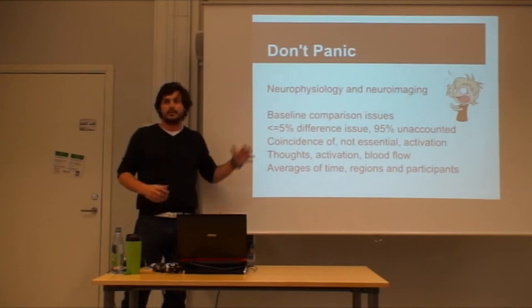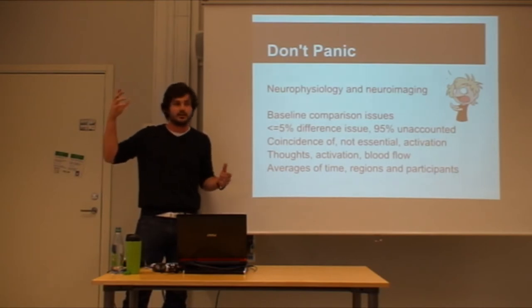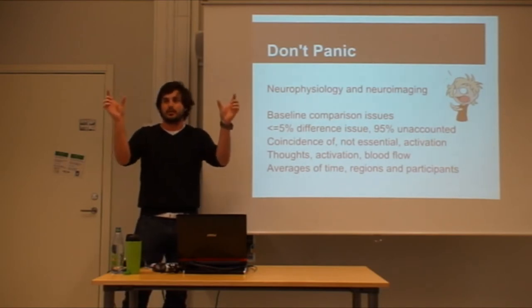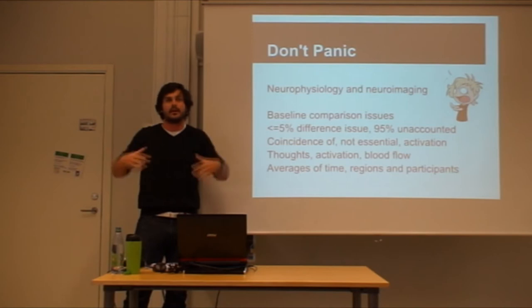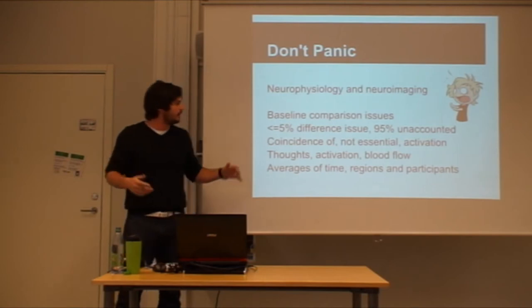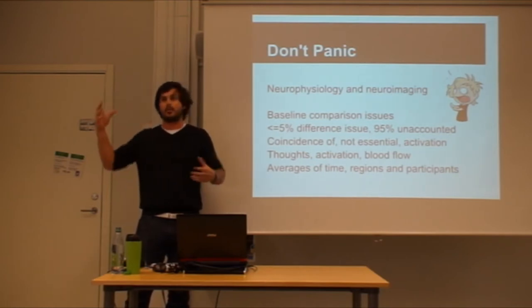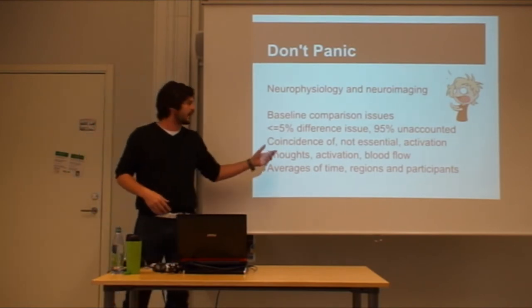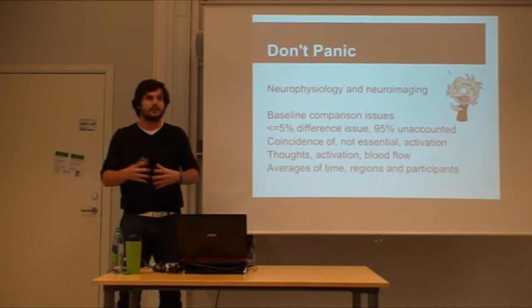Also, studies usually only focus on the differences between two tasks. This difference is at most 5% between the two brain images — there's 95% of activation that's the same in both tasks, and that's usually ignored. Furthermore, studies treat certain regions as essential regions of activation when in actual fact it's just a coincidence. You can't get a causal mechanism out of it — it's a correlation essentially. Another issue is that there are several steps of inference: more thoughts equals more activation, and more activation equals more blood flow, which is what fMRI measures. These two steps of inference create problems if you want to argue that what you're actually seeing are thoughts.